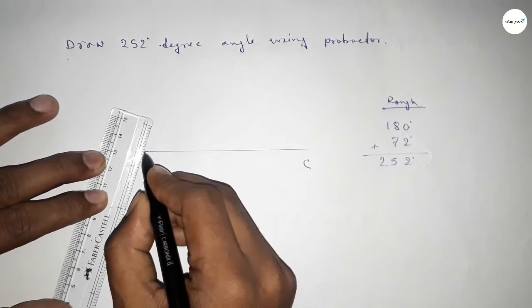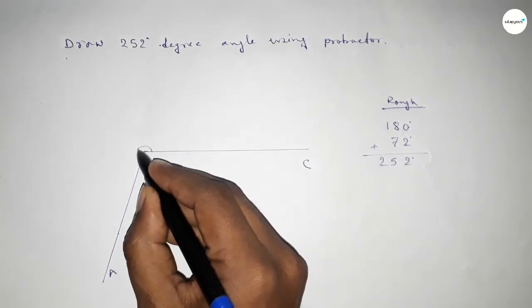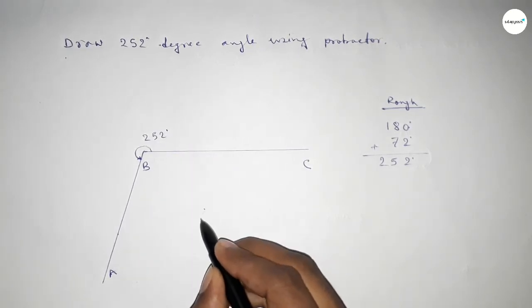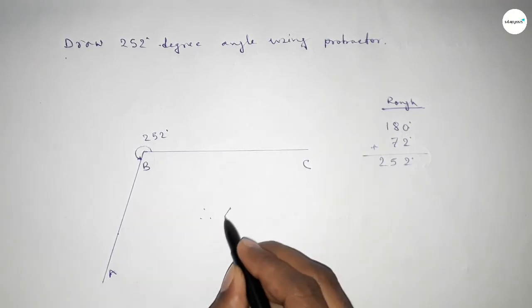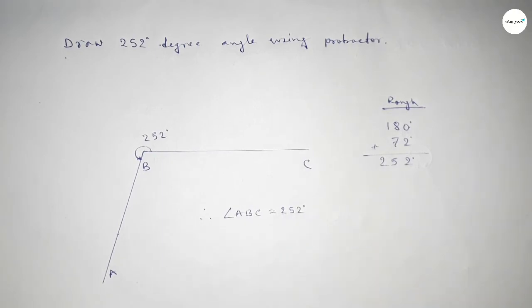Now joining this to get 252 degree angle and taking here point A. So angle ABC, this is 252 degree angle. Therefore, angle ABC equals 252 degree. That's all, thanks for watching. If this video is helpful to you, then please share.